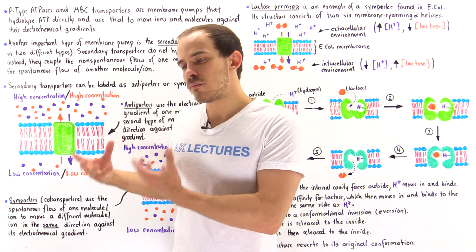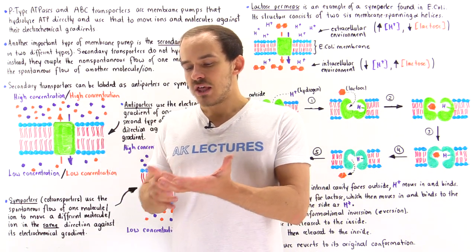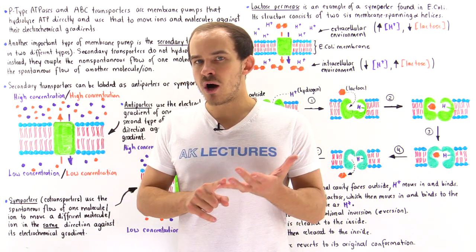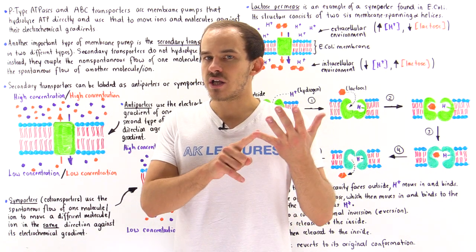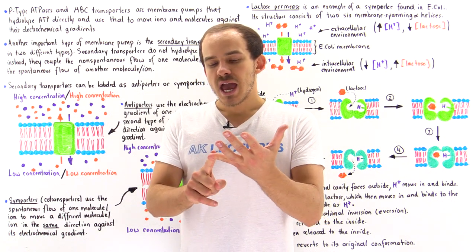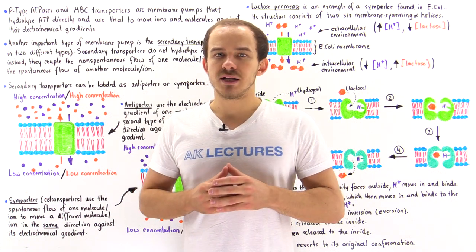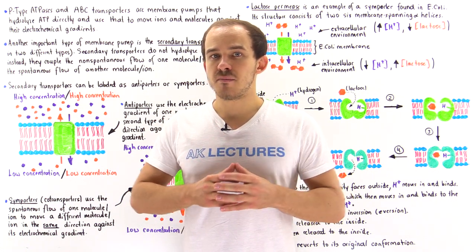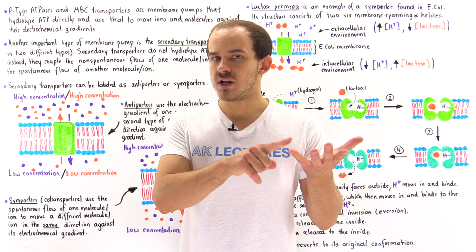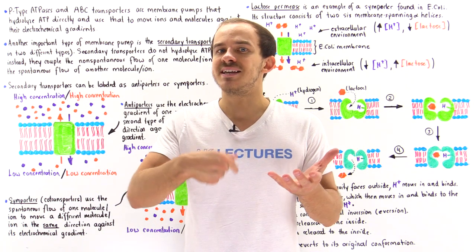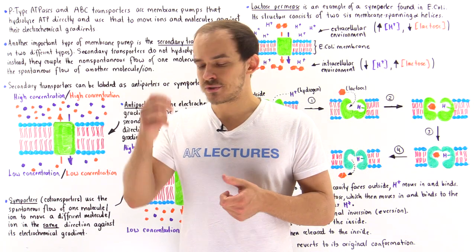Both are ATPases, meaning they are membrane pumps that break down ATP molecules directly and use the energy stored within the chemical bonds of ATP to move other molecules and ions against their electrochemical gradient.